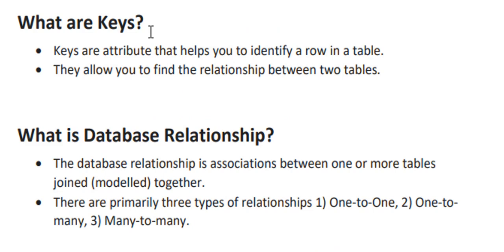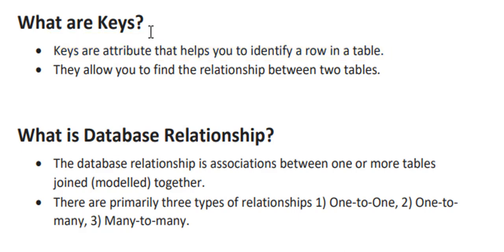What are keys? Keys are basically attributes that help you to identify a row in a table. When you find a table, the key is what tells us about the identity of each row. Keys also help us to establish relationships between several tables.